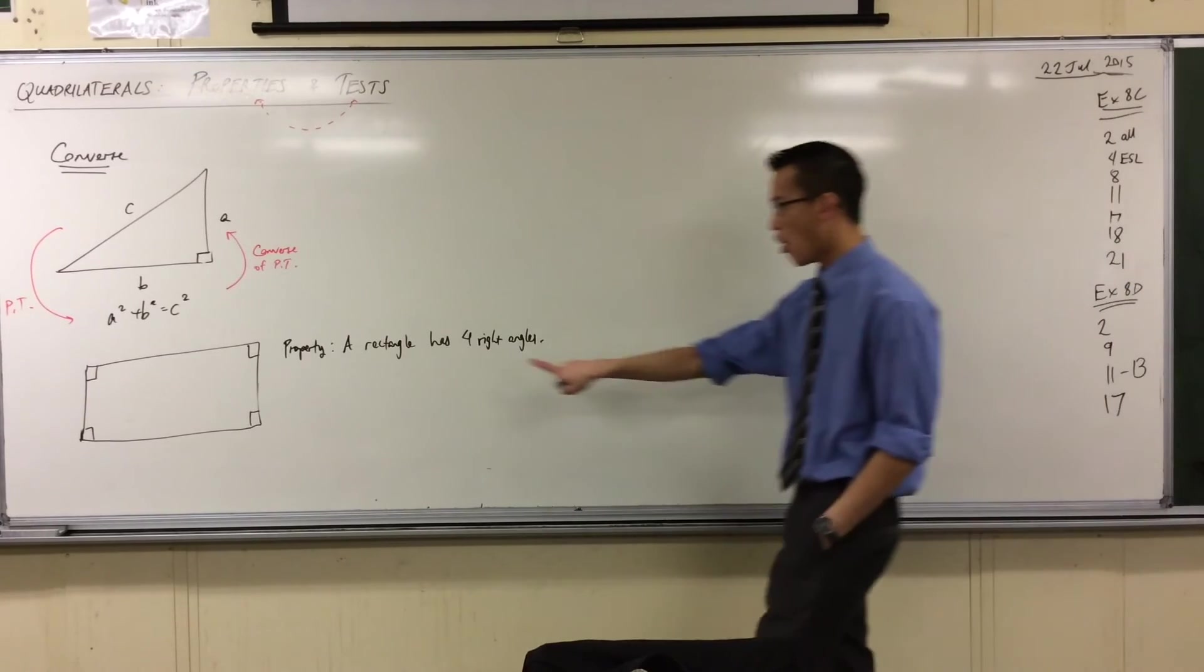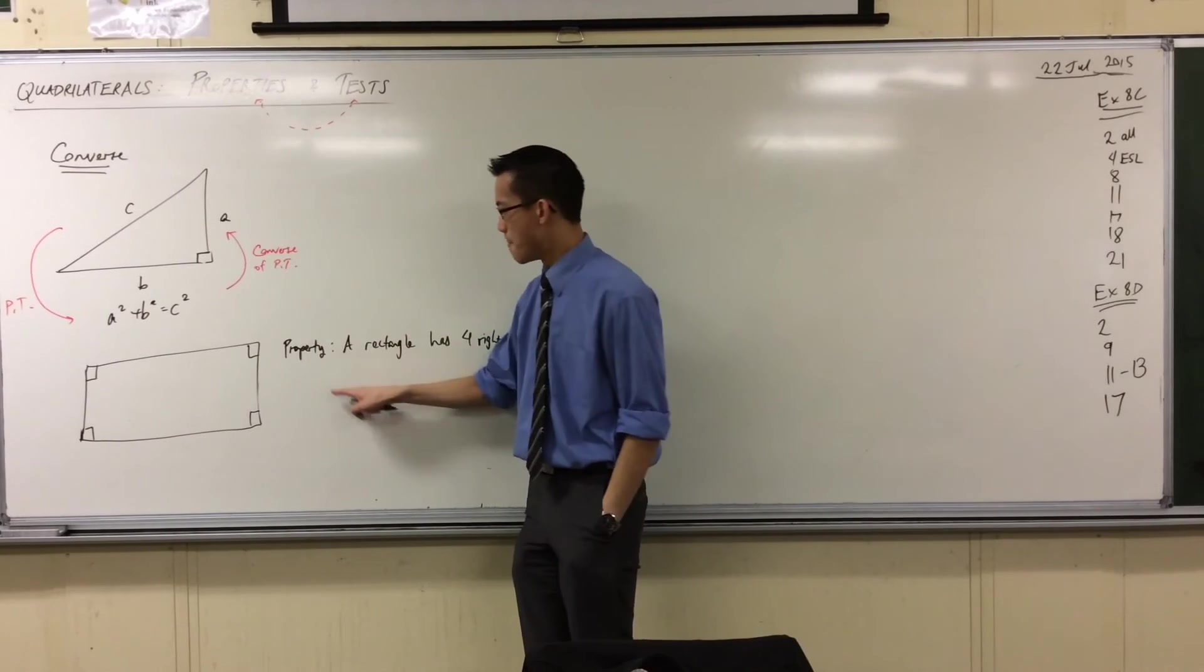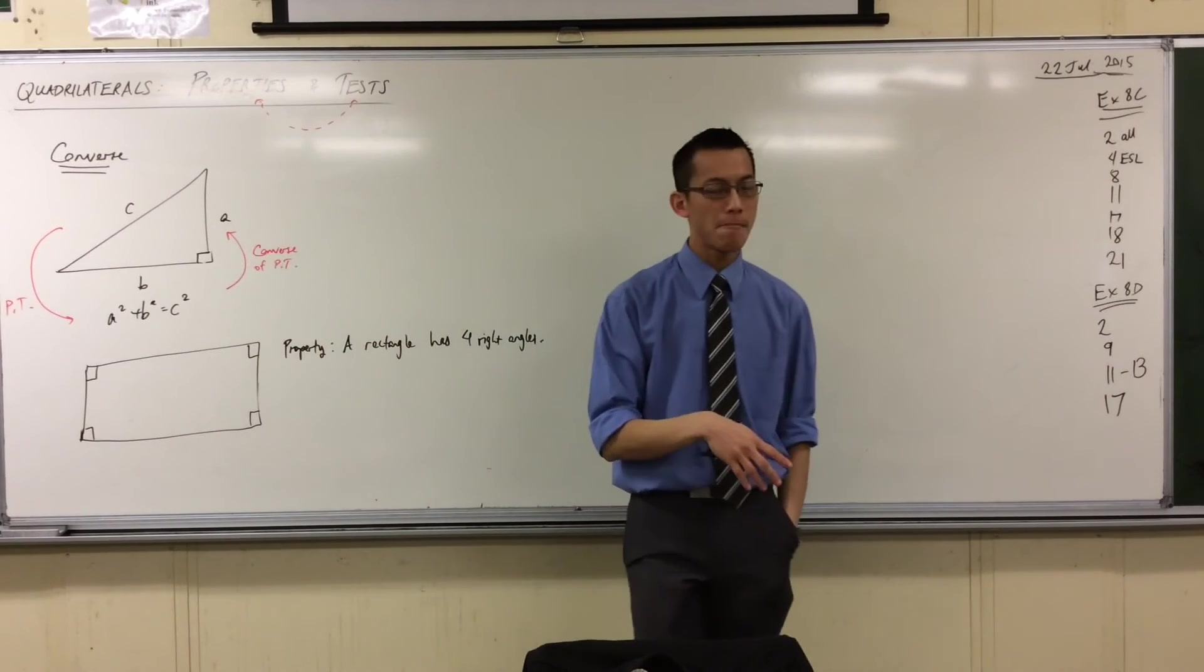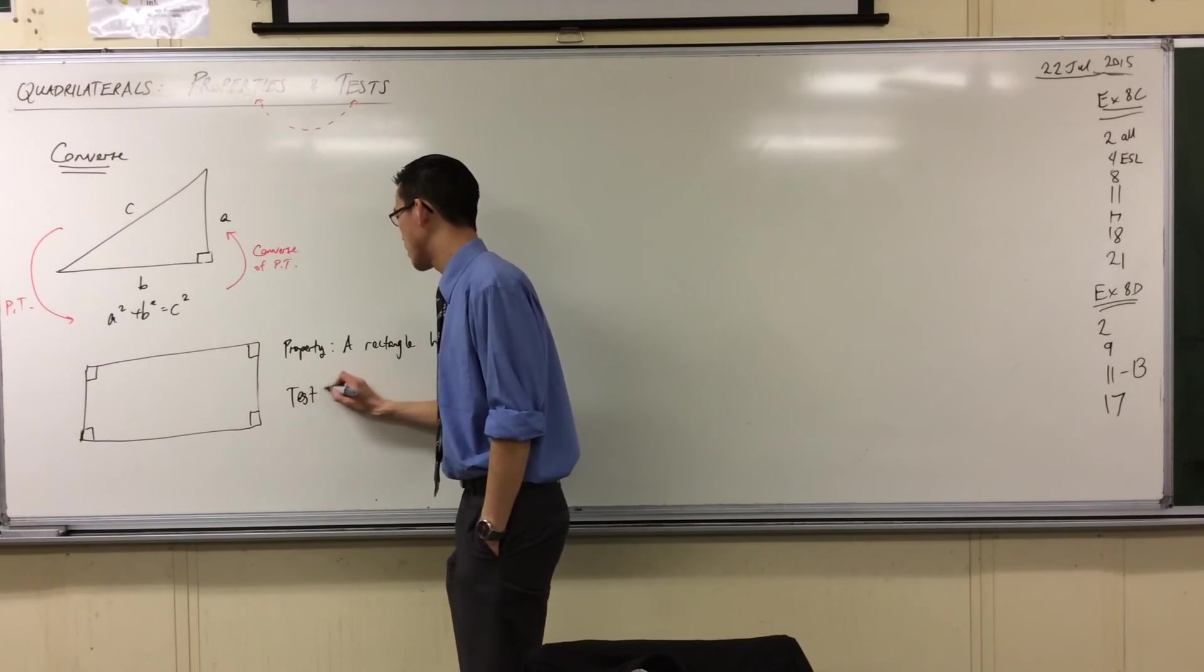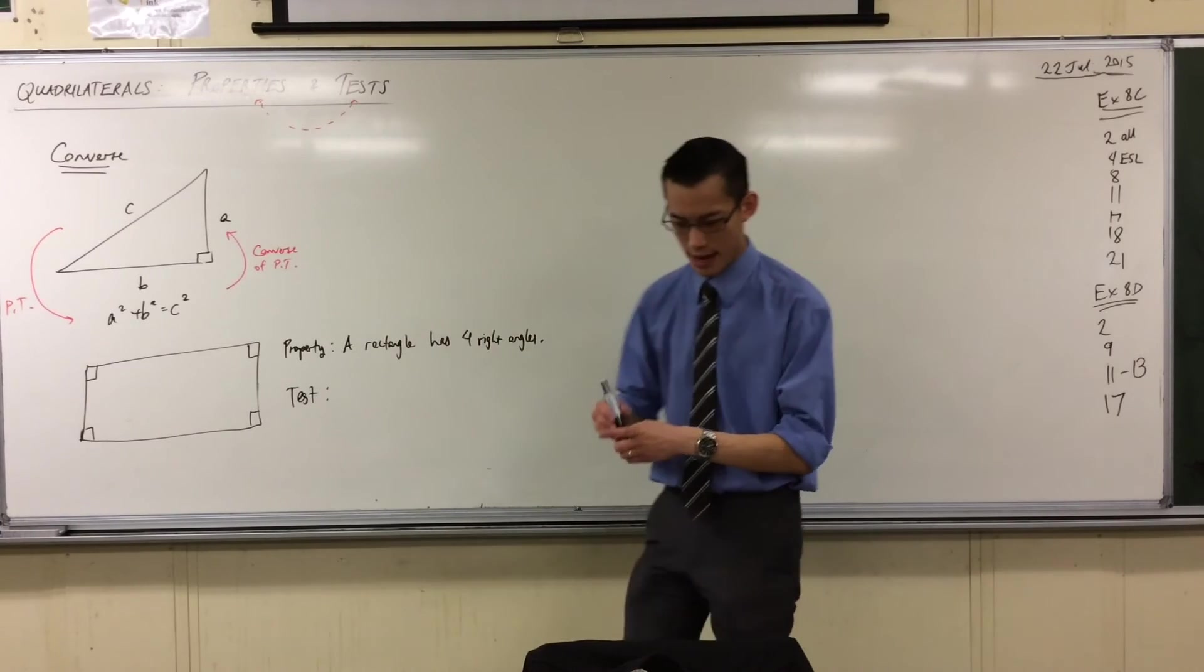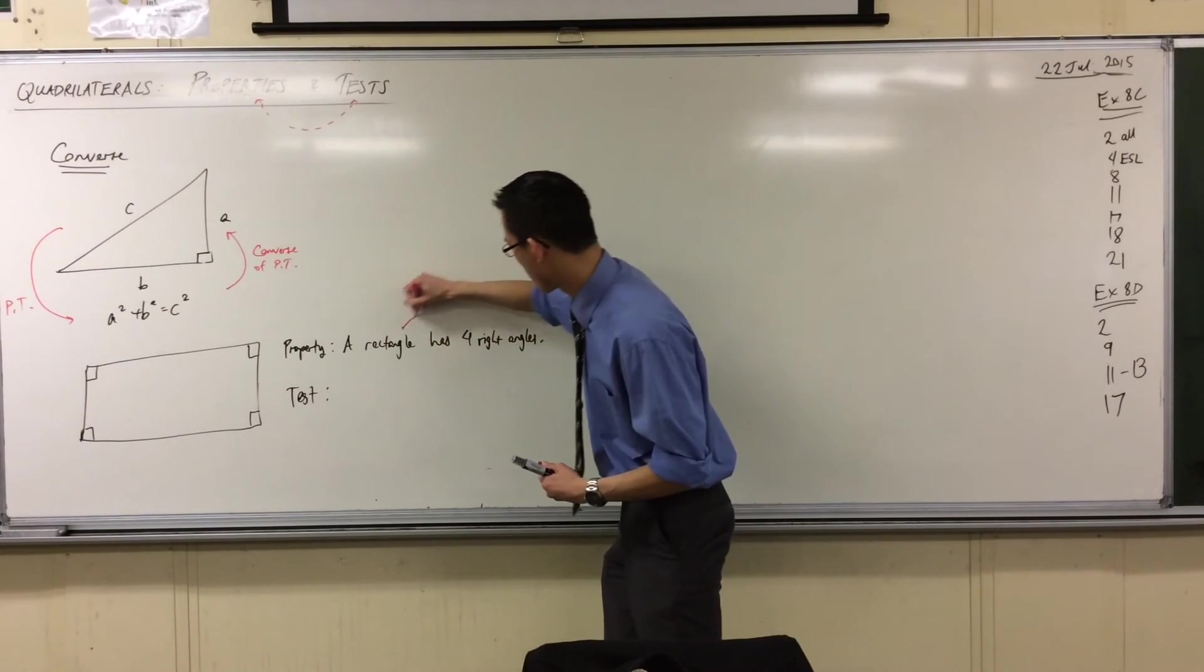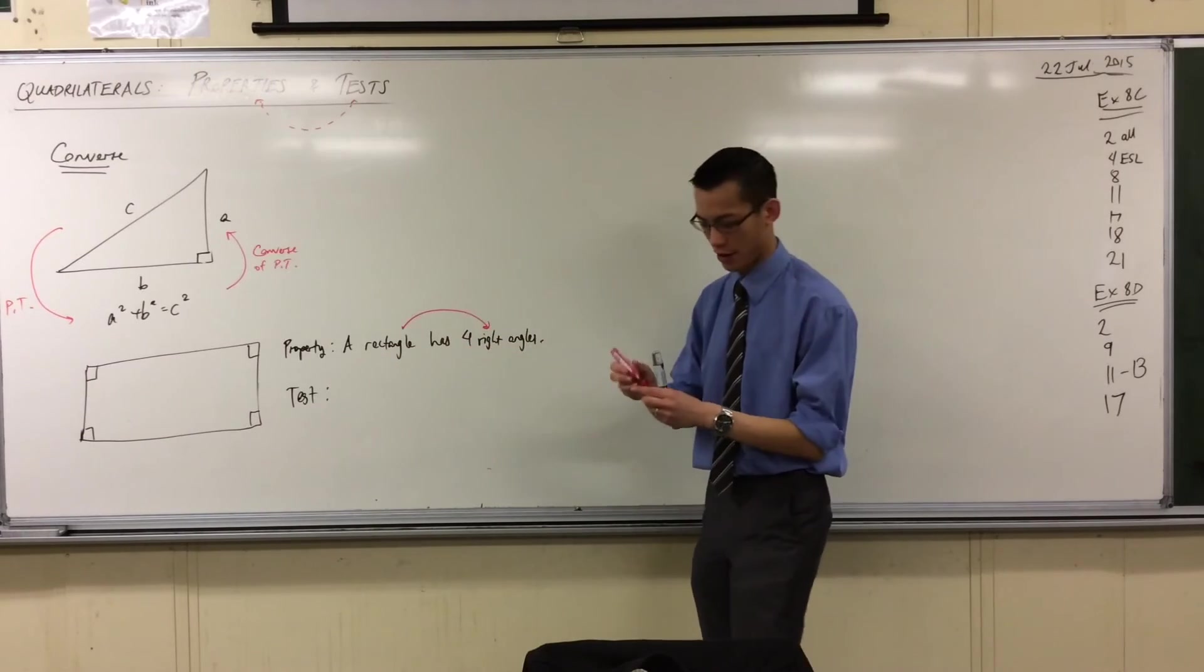But to think of this in the opposite direction, to think of the converse, makes this no longer a property, but what we call a test, and you'll see why. The converse of this is to say this in reverse. Rather than saying going in this direction, you know this, therefore you can deduce this, or you can state it, I want to go in the opposite direction.